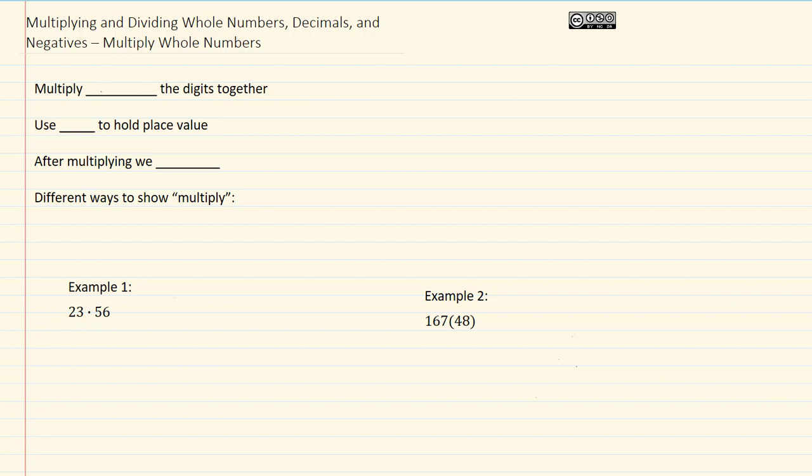Multiply all the digits together. We use zero to hold place value, and after multiplying, we add.